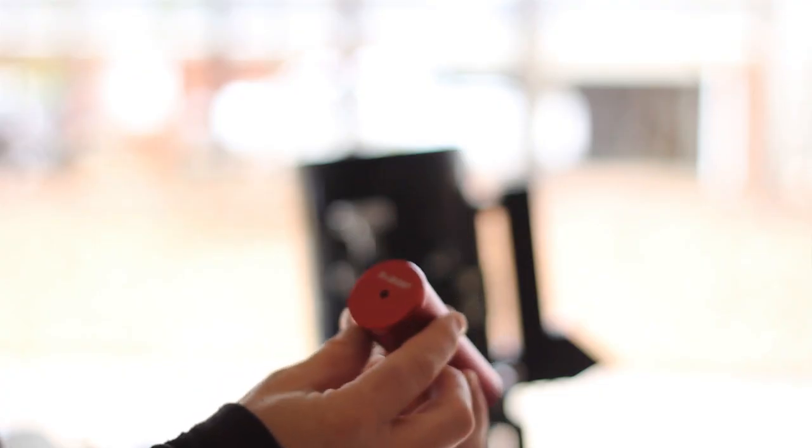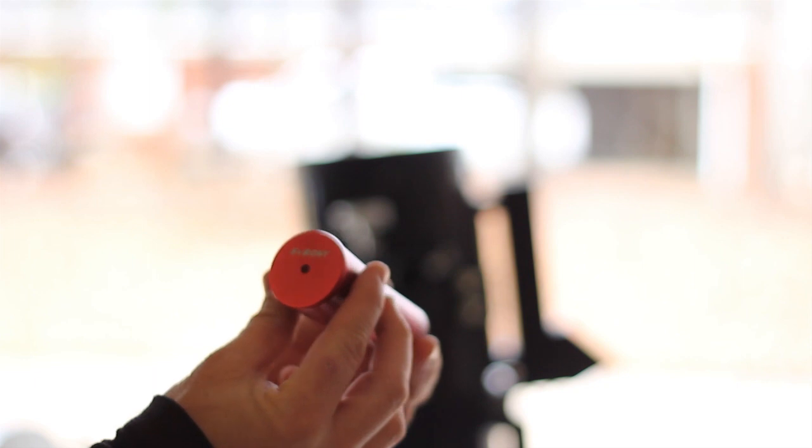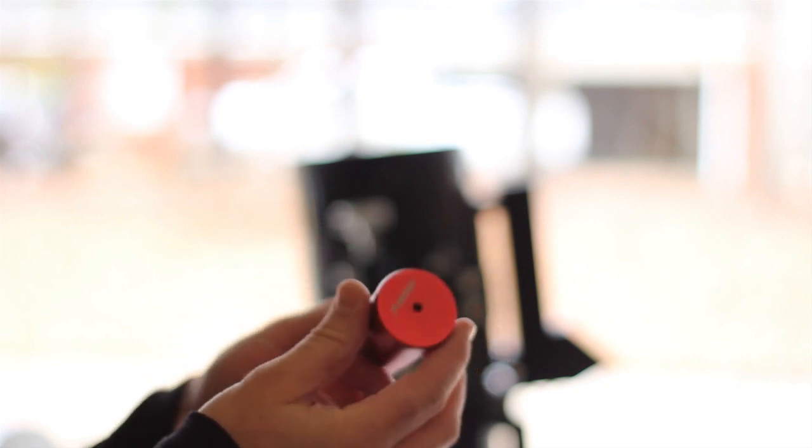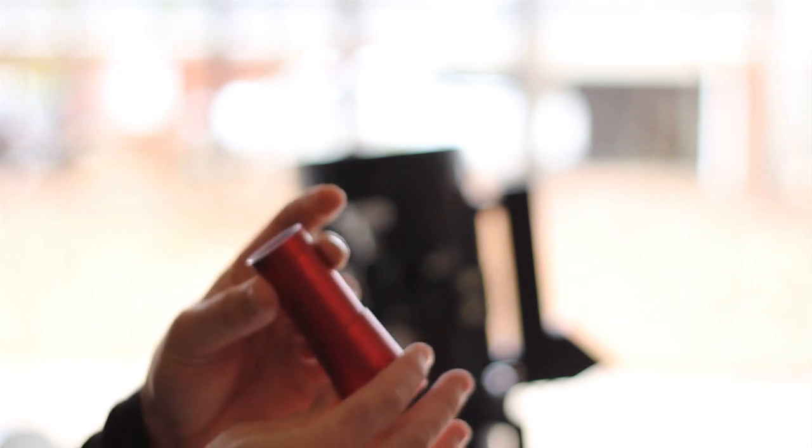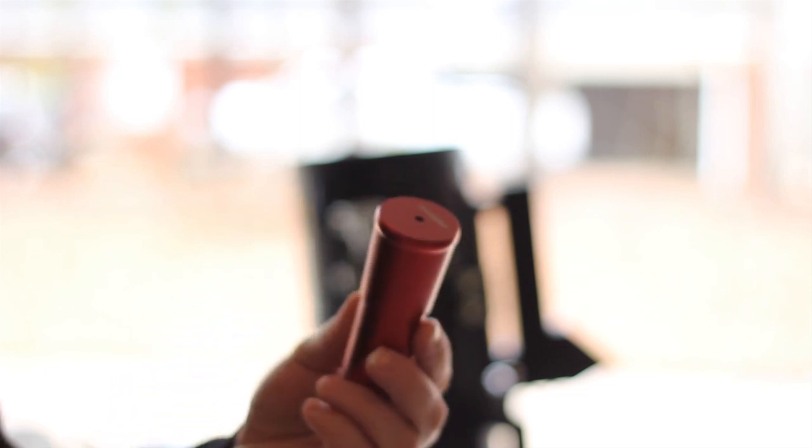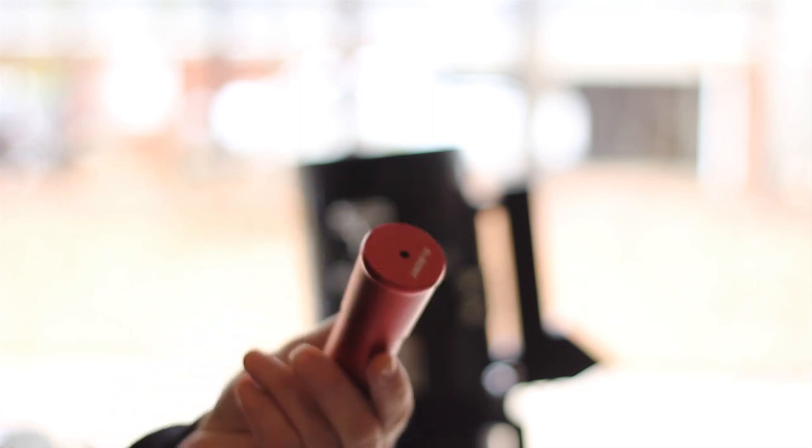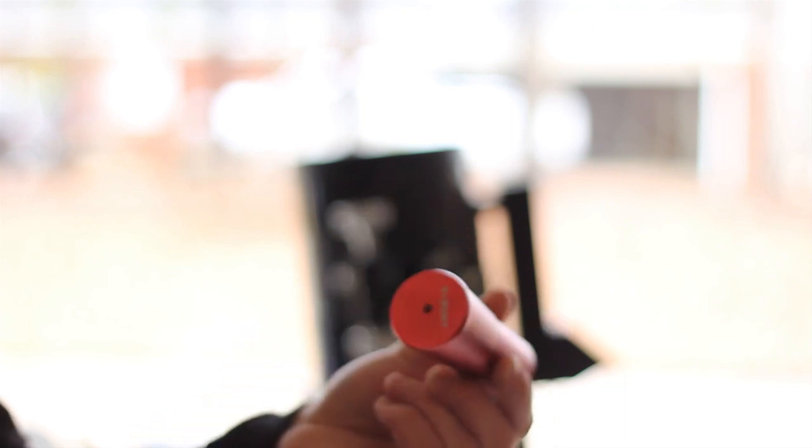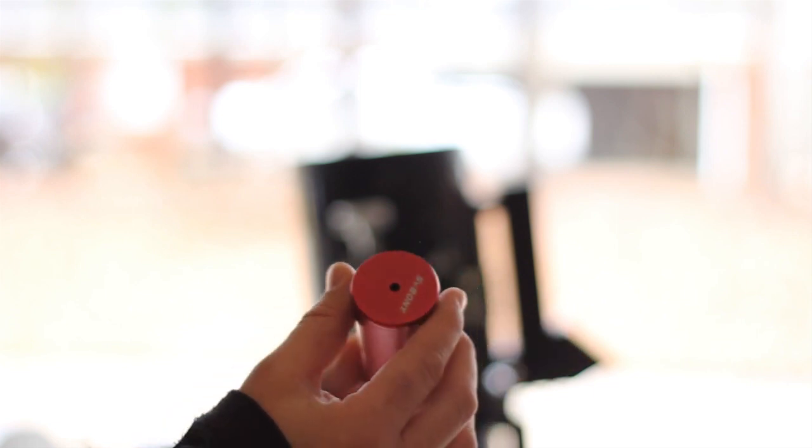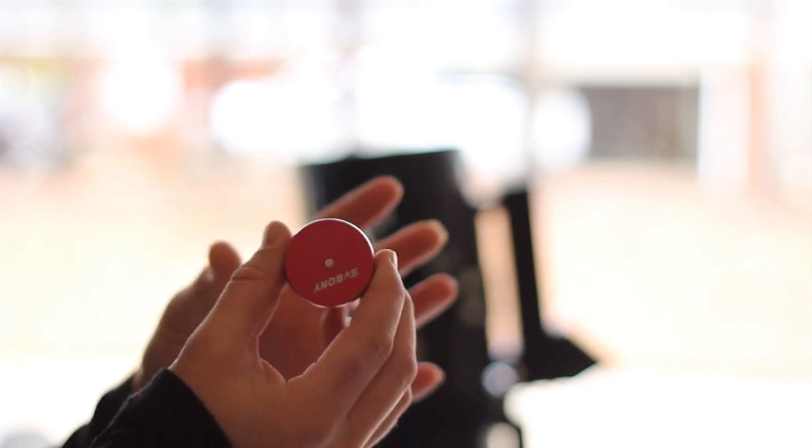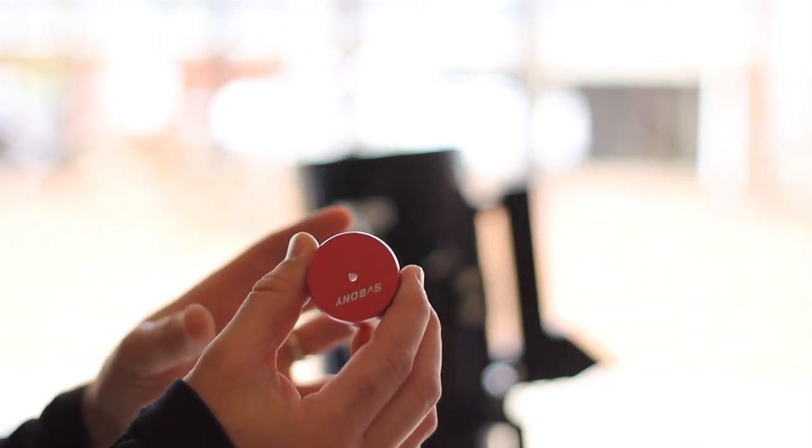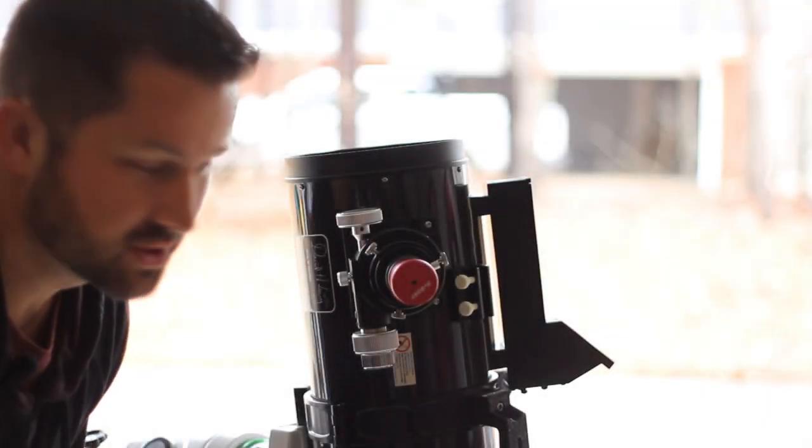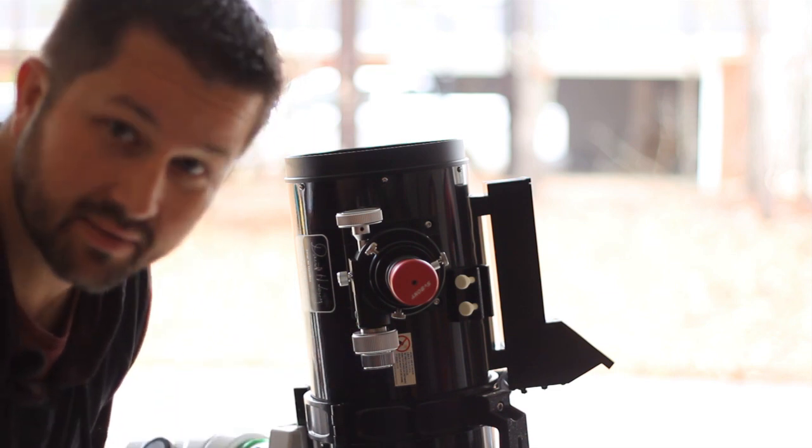The first tool we're going to use is this collimating eyepiece by SVBONY. Very inexpensive tool - you can pick it up online at auction sites, online stores. Very inexpensive, I think I got this for like 15-20 bucks, but it does the job very well. What you're going to do is put this inside the focuser draw tube.